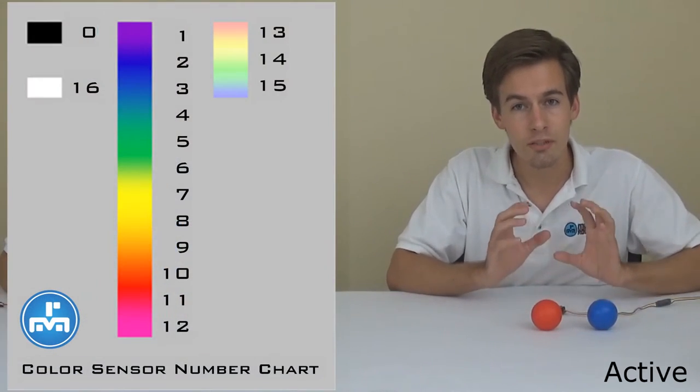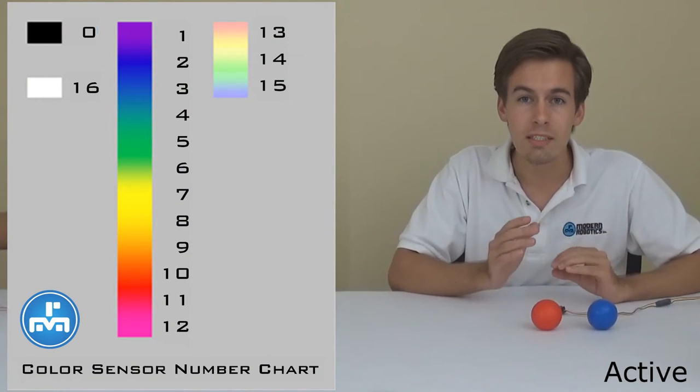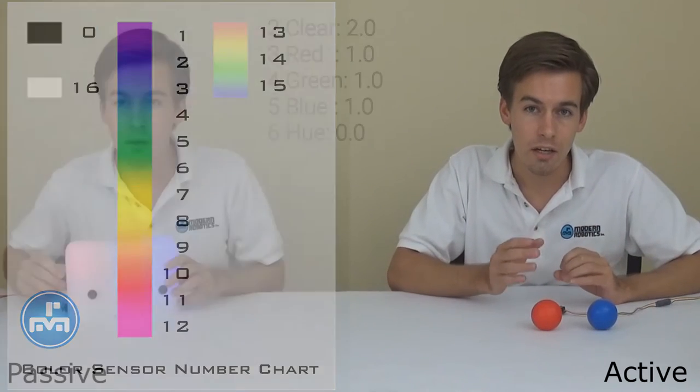They have a pretty good looking YouTube channel. Be sure to check that out afterwards. I'll be sure to link that below. Both modes have a variety of readings. The simplest reading is a color number. This is one value that represents a range of colors in the color spectrum.